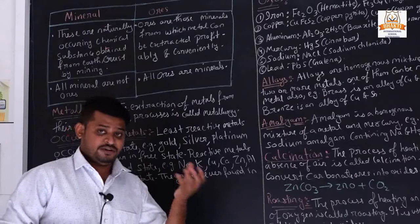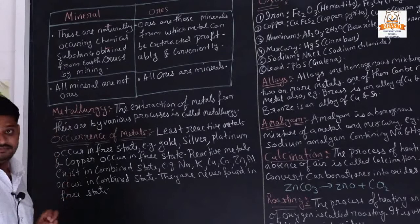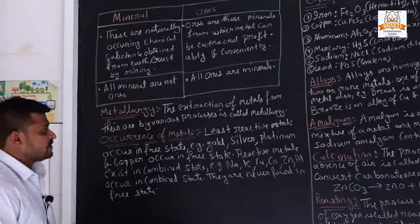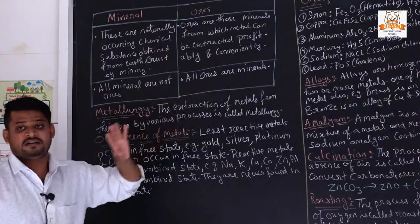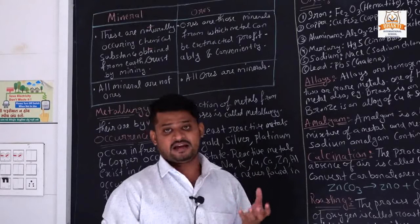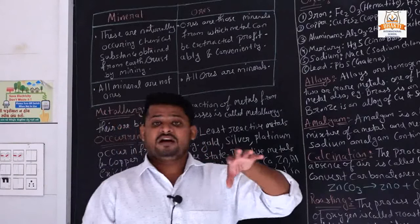Metallurgy is a branch of science in which we study how to extract metals and non-metals from their ore. The extraction of metals from their ores by various processes is called metallurgy. There are so many processes by which we collect metals and non-metals through their ores.